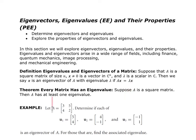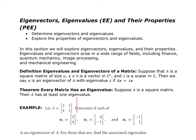Before we do that, let's look at this theorem — all theorems are in your book for your viewing pleasure. Suppose A is a square matrix; then A has at least one eigenvalue. This guarantees that if I have a square matrix, I will have at least one eigenvalue.